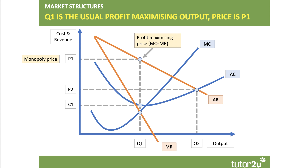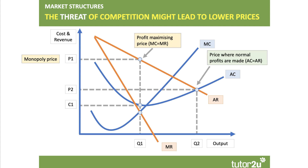And there's the monopoly price shown on our diagram. Now crucially, if the market was to become contestable — with freedom of entry and exit and the absence in particular of sunk costs — then it's highly unlikely that the price would stay at P1. There's a threat of competition coming into the market, and if the dominant firm, the established business in the market, were to price at P1, then there would be the threat of new firms and new products entering the market. So in a contestable market, it's likely that price will be lower than P1 and output higher.